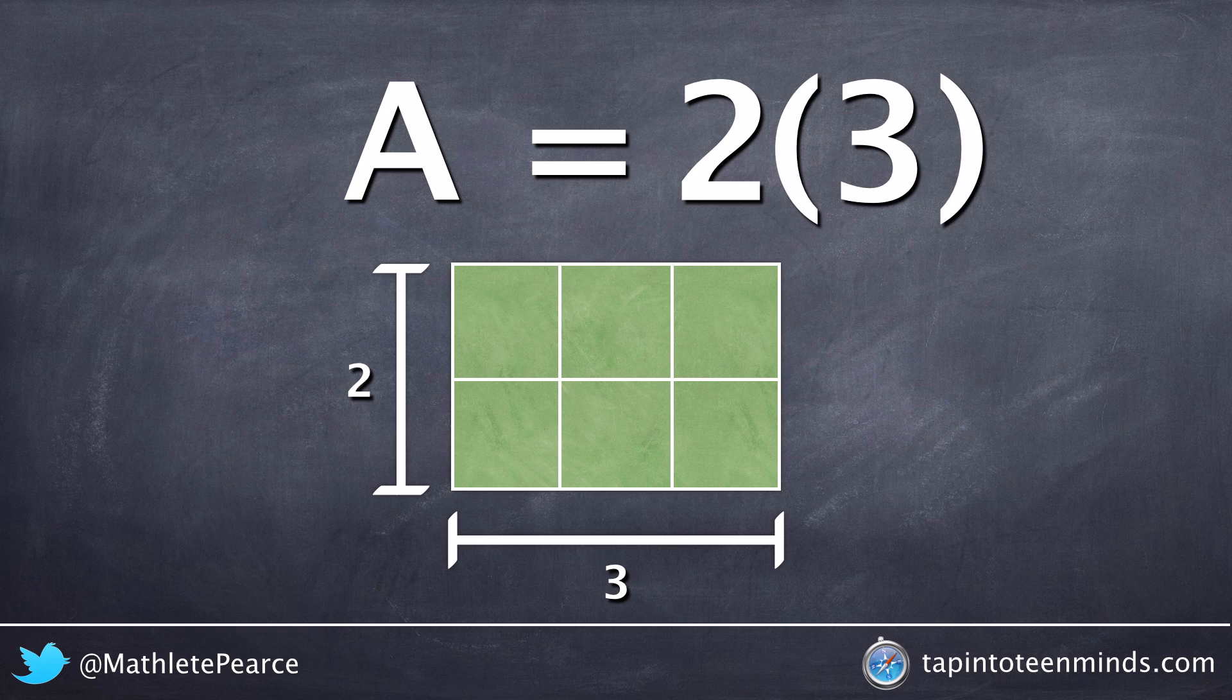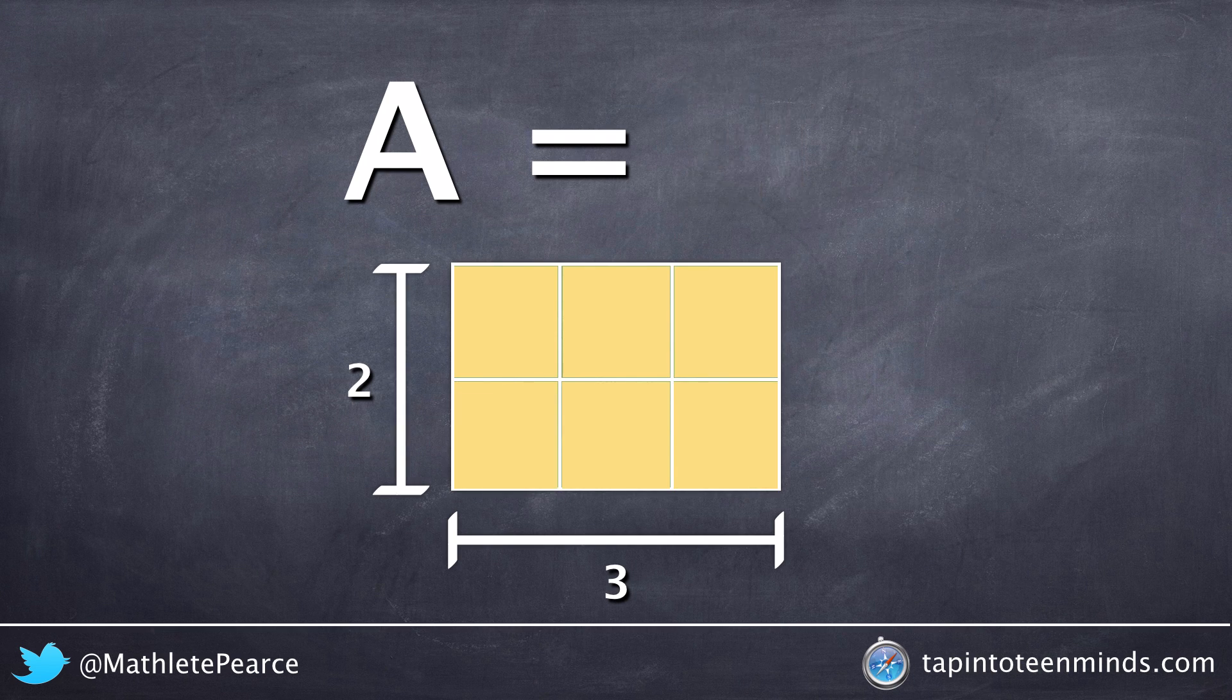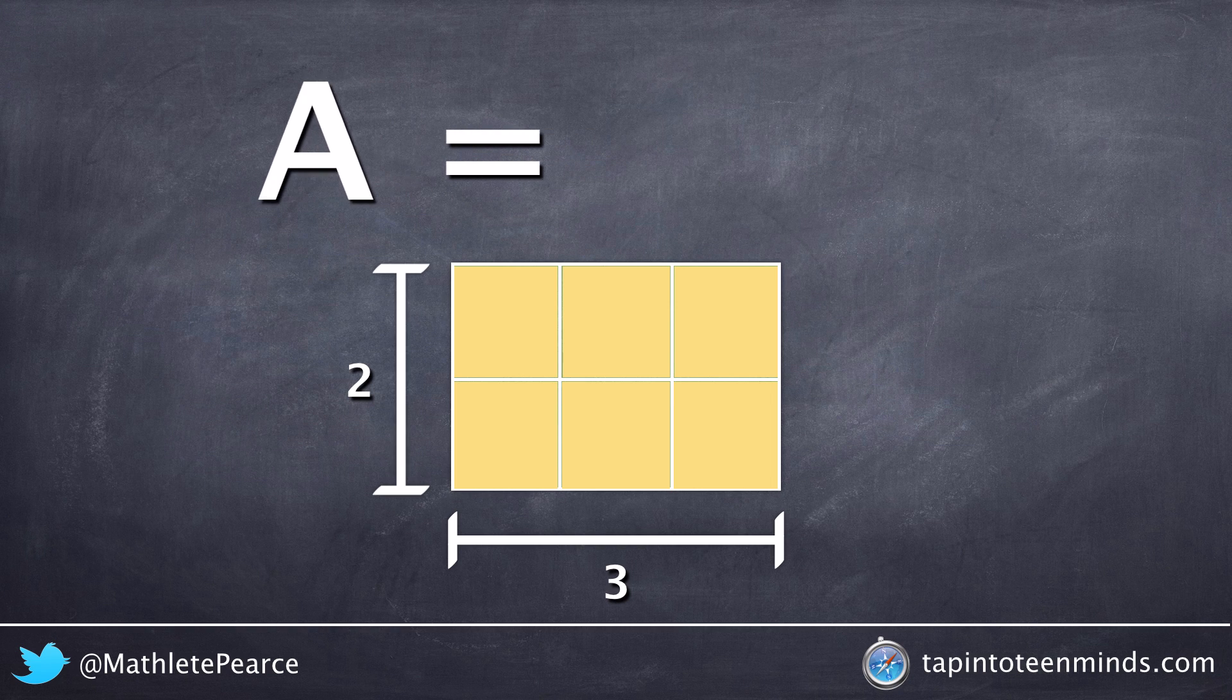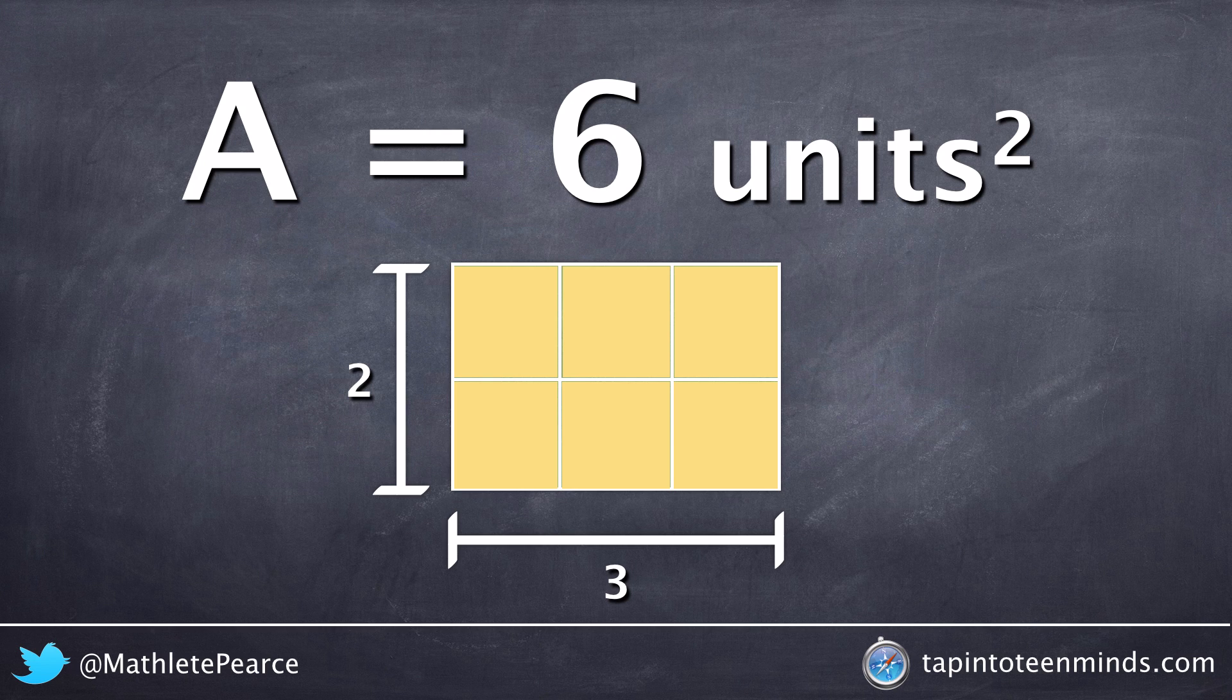By counting up the number of unit tiles in our 2 by 3 array in our diagram, or by multiplying 2 times 3 in our area formula, we can see that the area of this particular example is 6 units squared.